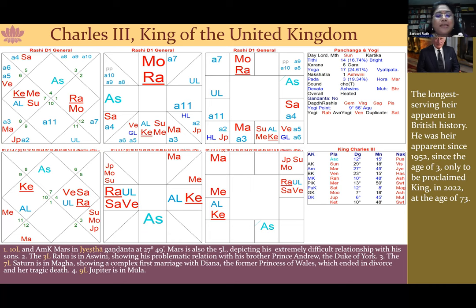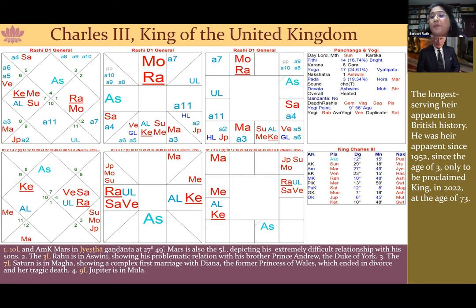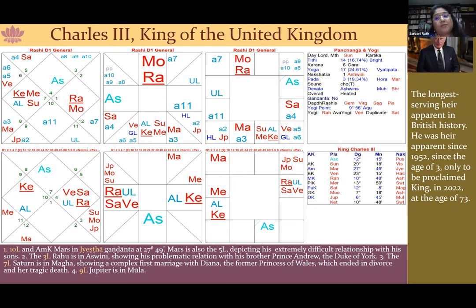The third lord Rahu is in Ashwini, showing a very problematic relationship with his younger brother the Duke of York, Prince Andrew. Prince Andrew had to give up all his royal duties and titles because of sex scandals — his career essentially had a finish. The seventh lord Shani is in Magha, which shows a very problematic and complex first marriage.